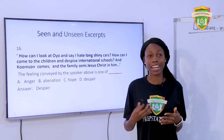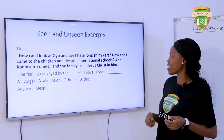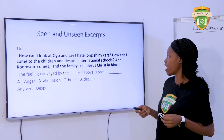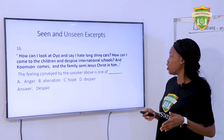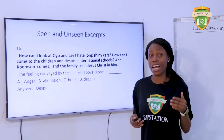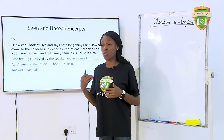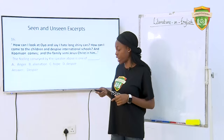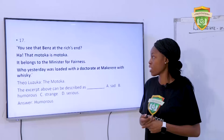Now let's look at the seen and unseen excerpts. Question 16: 'How can I look at oil and say I hate long, shiny cars? How can I come to the children and despise international schools, and come soon, and the family selling Jesus in him?' The feeling conveyed by the speaker above is one of — A. Anger. B. Illumination. C. Hope. D. Despair. The answer is despair. You must have an idea of what mood and tone refer to in literature, and from this excerpt you can tell the feeling expressed.